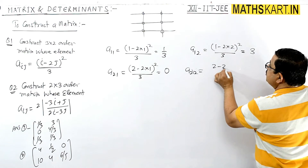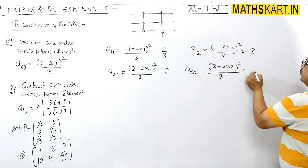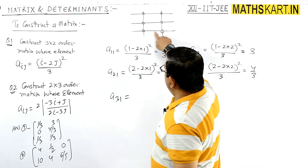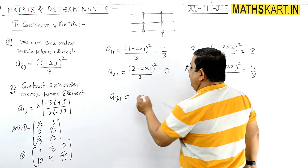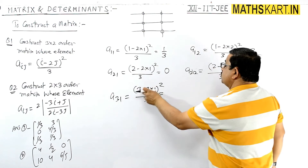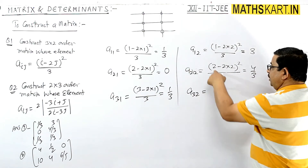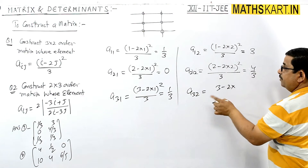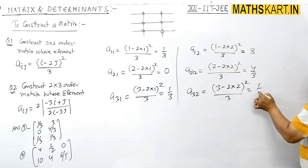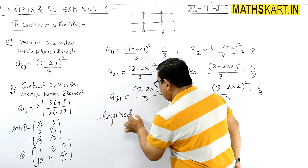A21: i=2, j=1 → (2 minus 2×1)² / 3 = (2−2)² / 3 = 0/3 = 0. A22: (2 minus 2×2)² / 3 = (−2)² / 3 = 4/3. A31 — third row, first column — i=3, j=1: (3 minus 2)² / 3 = 1/3. A32: i=3, j=2 → (3 minus 4)² / 3 = (−1)² / 3 = 1/3.